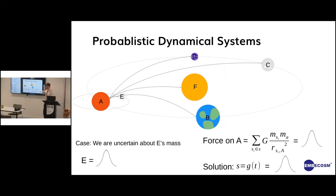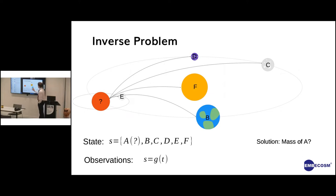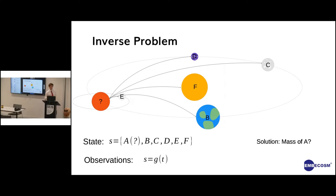Now let's talk about the inverse problem. With classical dynamical systems we generally want to solve for time. Another setup we might want is the inverse problem. Consider the case where, with our planetary system, we have the movement of all the planets except planet A over 100 years, and we have the rules of physics — and what we want to reverse-engineer is the missing data: what position and velocity of planet A led to the observed movement of all the other planets over that hundred-year period.